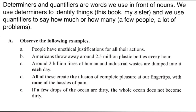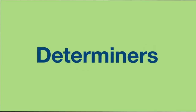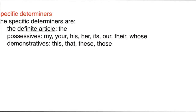Look at some examples from your textbook. In section A, observe the following: 'People have unethical justifications for all their actions' and 'Americans throw away around 2.5 million plastic bottles every hour.' The highlighted words — 'each', 'all of', 'none of', 'a few', 'the' — are examples. 'The' is a determiner, and 'all of' or 'none of' are quantifiers.